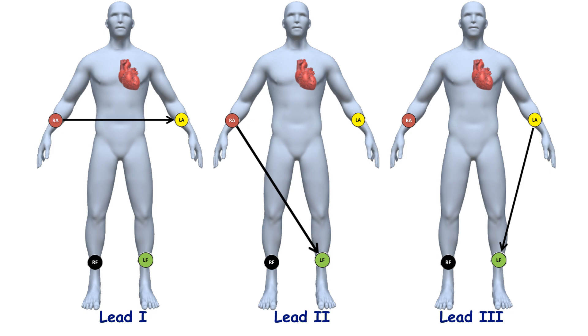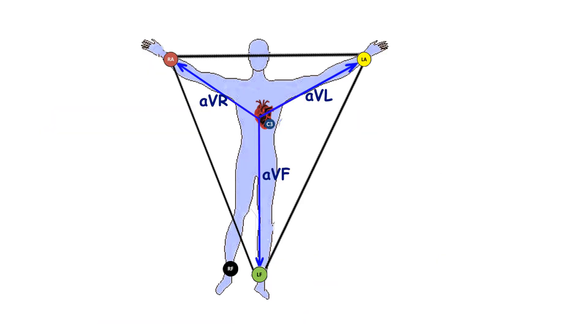Augment leads are derived from the electrodes attached on the limbs. Two electrodes are included into the negative pole, while the other one belongs to the positive pole. Lead AVR has a positive pole on the right arm and a negative pole that includes combination of the poles on the left arm and the left leg.